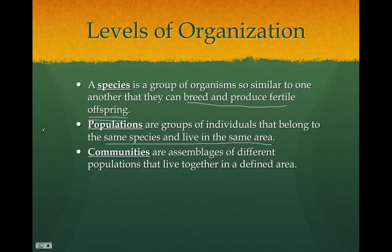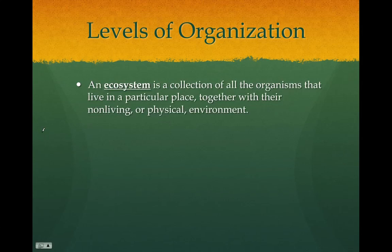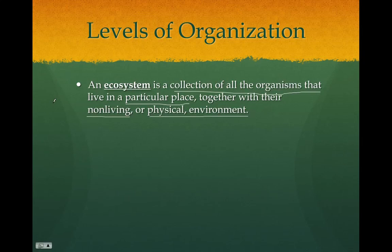A community is made up of many different populations that live together within a defined area. An ecosystem is the collection of all those populations of organisms in a particular place — they live together and interact with non-living things and their physical environment. So an ecosystem addresses both living and non-living things interacting at a much larger scale.